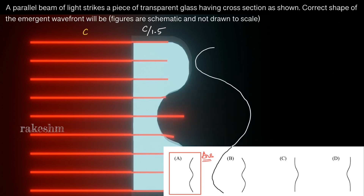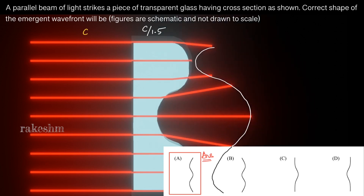Here we have a plane, then a bulge, and again a plane — so the possible wavefront after light enters the plane surface of the glass could be option C. If the question were 'what are the possible wavefronts after light enters the glass surface,' the answer would be option A and option C. But for the question given in the exam, the correct option is option A. See you all in the next video.